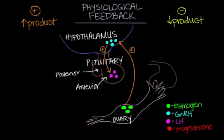The hypothalamus communicates its message down to the anterior pituitary. LH can also go ahead and stimulate the release of even more estrogen — positive feedback again. So here we have a cycle: estrogen causes the release of GnRH, which causes the release of LH, which causes the release of even more estrogen, and the cycle continues. You can see that chain effect we were talking about.